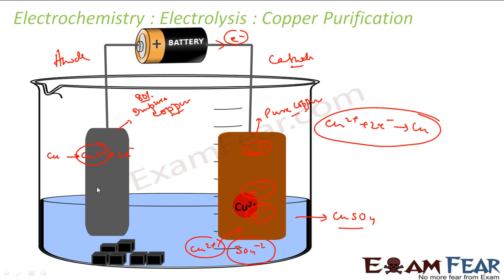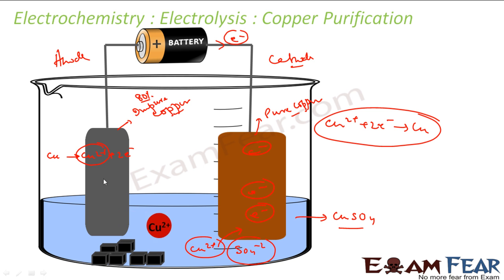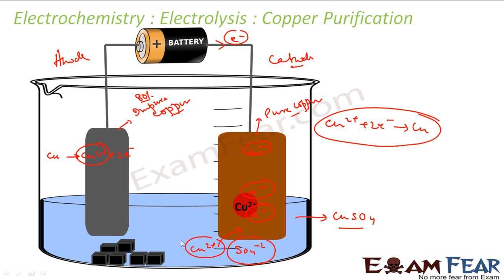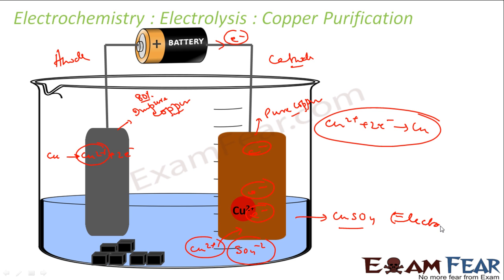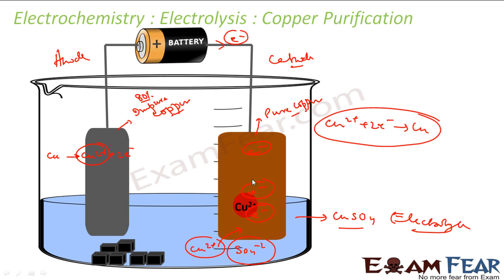To recap: I had this impure copper at the anode. There was a deficit of electrons on that side, so the impure copper gave two electrons and became Cu²⁺, which is now part of the copper sulfate solution. On the cathode side, the large supply of electrons attracted the Cu²⁺ ions, which became copper and got deposited as pure copper.